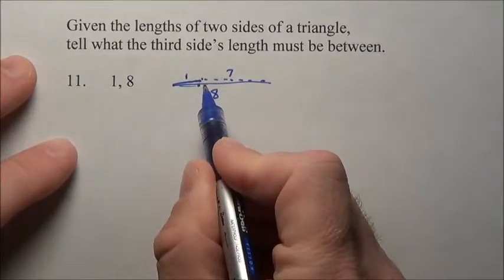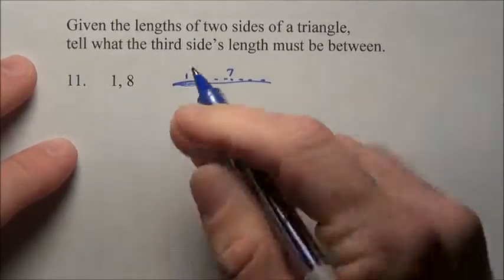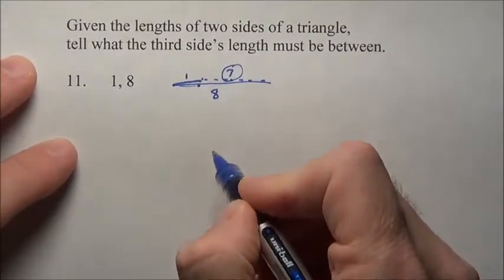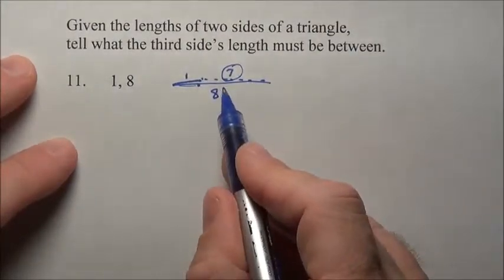If it were flat there, then it would be exactly 7, but since he's up a little bit, we've got to stretch a little higher. So, 7 would be as small as this side could be.